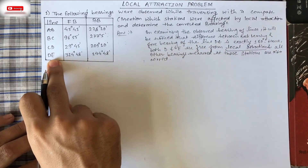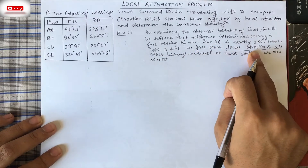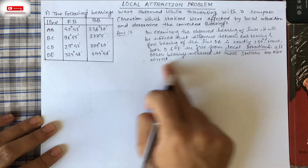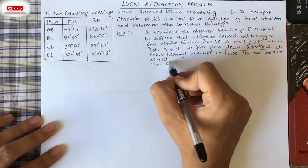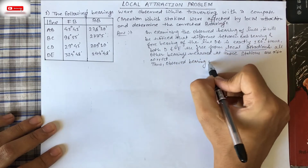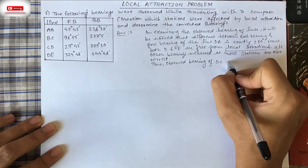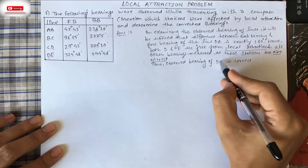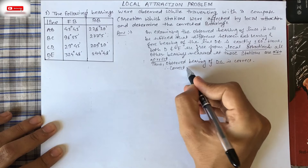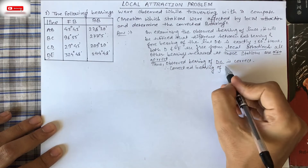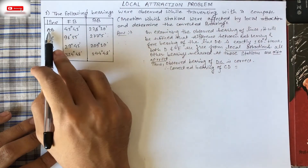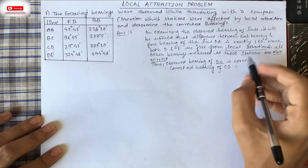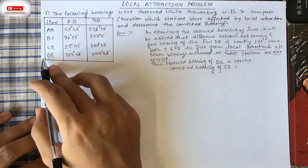This means in line DE we exactly found 180°; hence both D and E are free from local attraction, and the bearing measured at those stations — that is, DC — is also correct. So the observed bearing of DC is correct. Since DC is correct, the corrected bearing of CD equals 290°10' minus 180°, which gives us 29°10'.